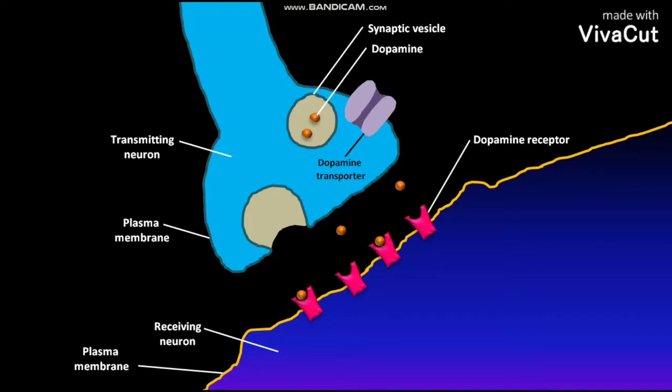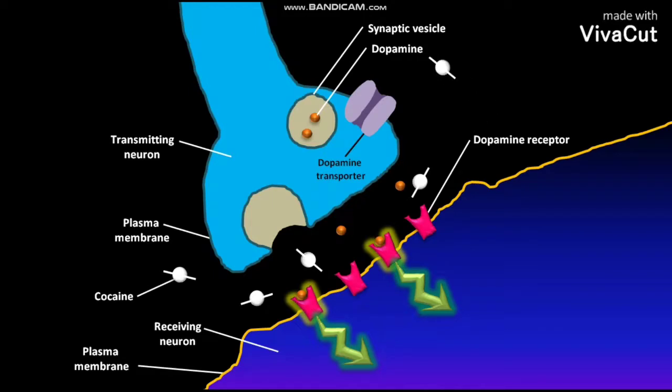Due to this binding, the dopamine receptors become active. The activated dopamine receptors then cause the excitation of the receiving neuron. The drug cocaine binds to the dopamine transporter on the transmitting neuron's plasma membrane.